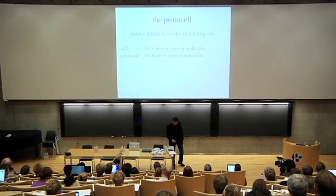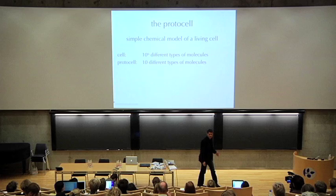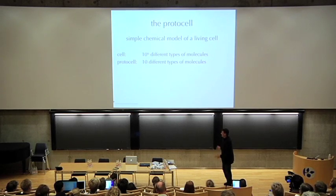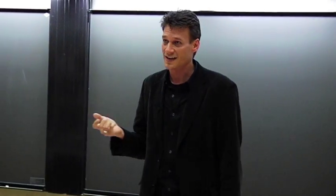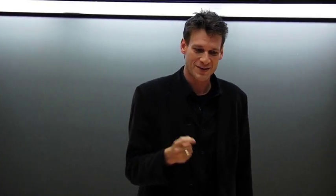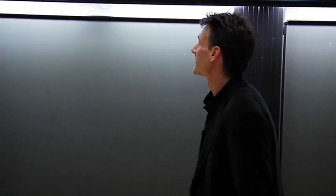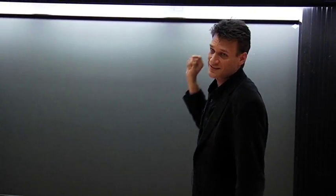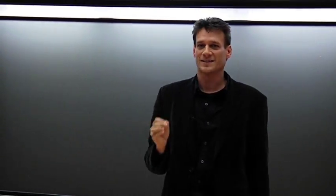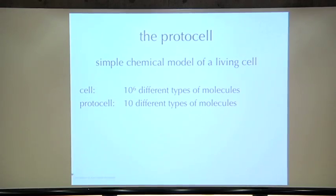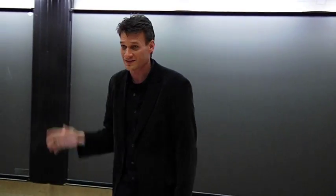This concept is a simple chemical model of a living cell. A normal biological cell has on the order of millions of different types of molecules that have to work together and organize to form something that is alive. The challenge for people like me is to make something that has lifelike properties using on the order of tens of different types of molecules — a drastic reduction in complexity, but still with some kind of living property. It's a huge challenge and we may not be able to do it, but this is the model we're playing with.